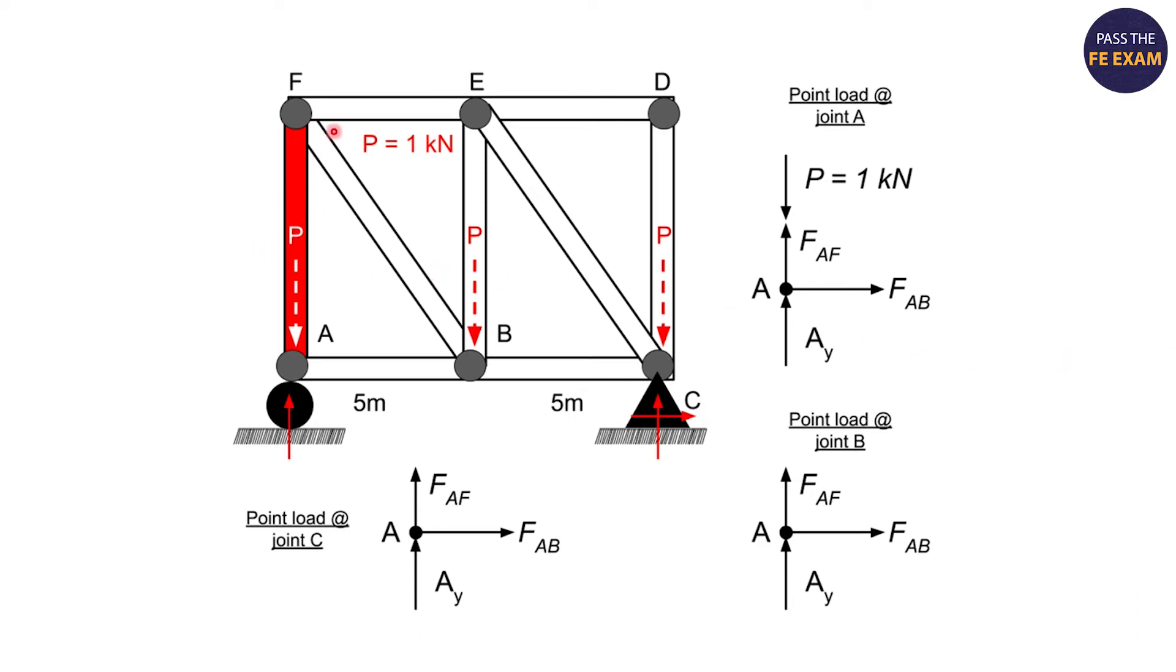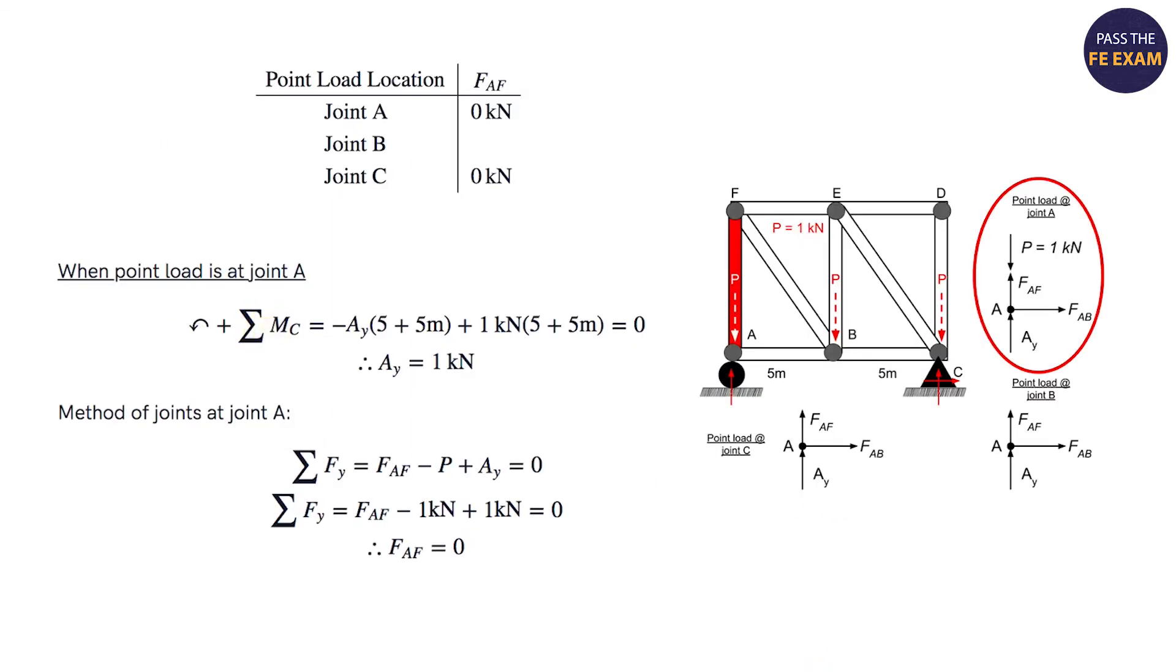Now, again, they're asking for the force in AF when there's a one kilonewton point load here. And they've told you what it is for this and this. But what I'd like to do to start is the point load moves from joint A to joint B to joint C. So I'm going to walk you through each one of these joints just so you can see how this is done. In the future, you might have to solve it for each of the joints. So again, here's the table that they've given us.